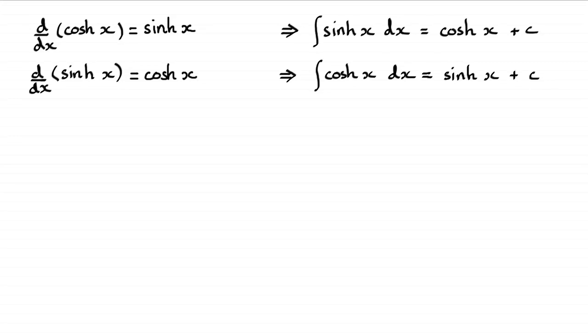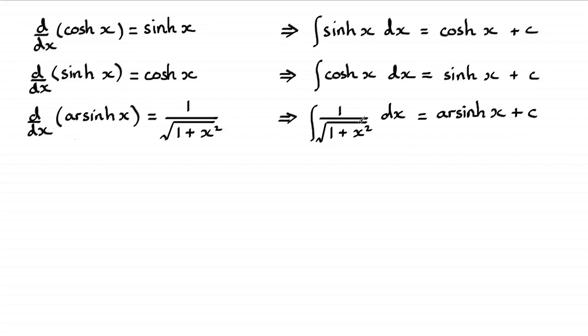Now when we come to this one here can you remember what the differential of arcsinh x was, the inverse of sinh x? Again do check out the description for video tutorials on this if you're unsure. But we found out that it was one over the square root of one plus x squared. So if we have to integrate that then the integral of one over the root of one plus x squared with respect to x is going to be arcsinh x plus that constant of integration c.